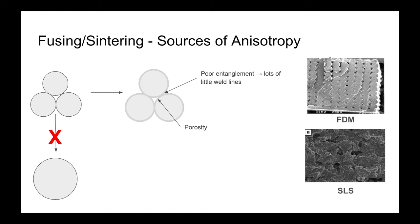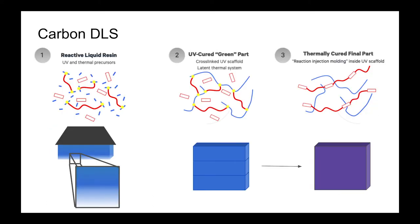Carbon's DLS process is similar to traditional photopolymerization processes but with a few twists to improve isotropy even more. Oxygen gives less defined layers during the UV curing process, which can lead to better entanglement between layers during the print. Even more importantly, the printed part incorporates latent curatives that are used to grow polymers within the part in a secondary heating step. This step doesn't have flow or layers and will further improve isotropy in the final part.